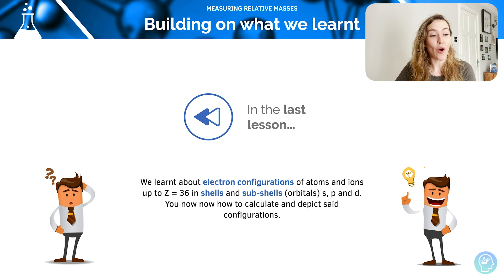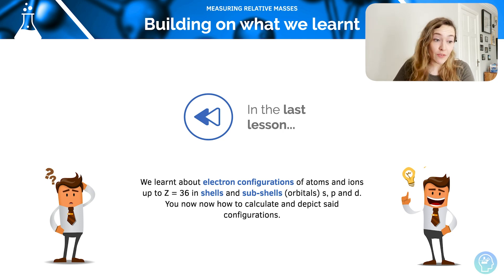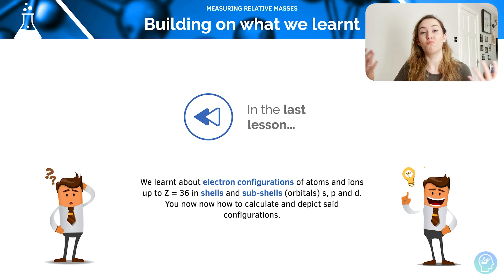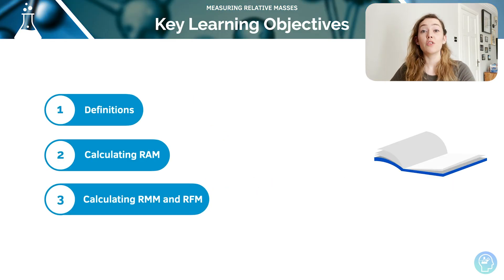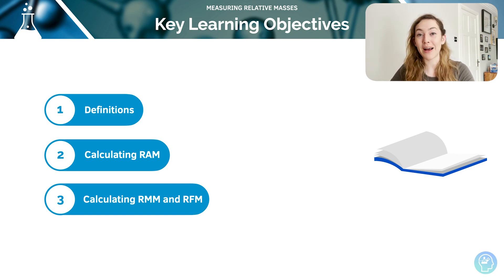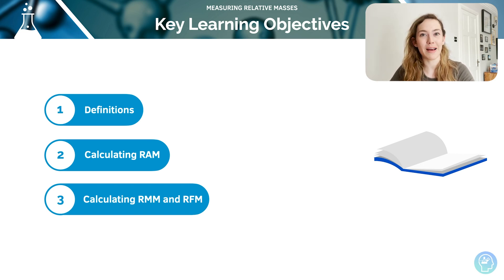Hi and welcome to this tutorial on measuring relative masses. In the previous tutorial we learnt about electron configurations — the S, P and D subshells — how to write them out and how to do them for ions as well. In this tutorial we're going to be looking at relative masses, some definitions you need to learn by heart, calculating the relative atomic mass, and calculating the relative molecular and relative formula masses too.